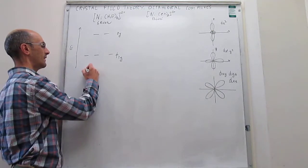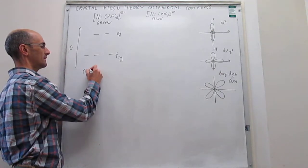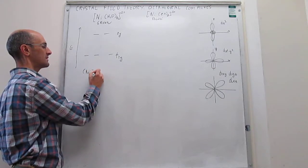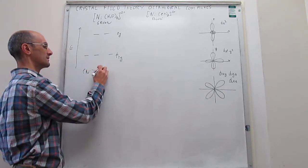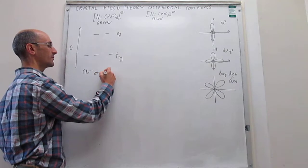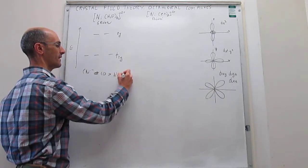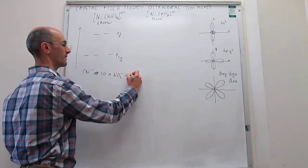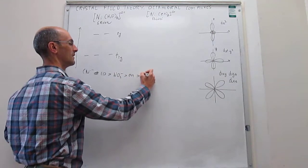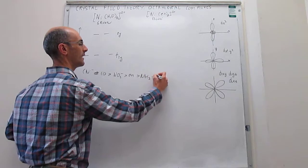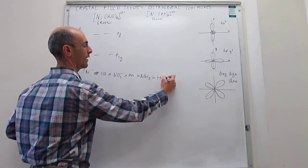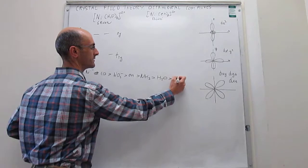This can be followed by something that we call the spectrochemical series, where you have the cyanide ligand causes about the same splitting as a carbonyl ligand, a little smaller than nitro, a little smaller than ethylenediamine, ammonia, aqua or water, and then the halogens.